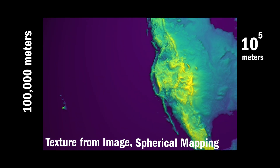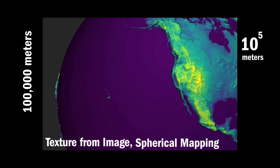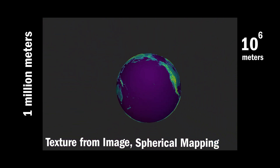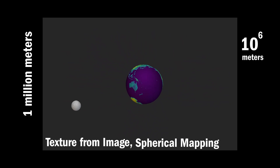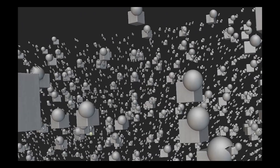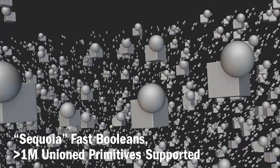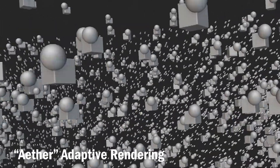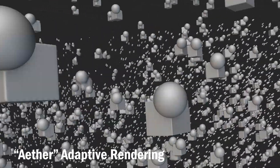At 10 to the 5th meters — the distance an orbiting satellite covers in 10 seconds — we continue to 10 to the 6th, a 1 with 6 zeros: 1 million meters. We apply a spherical mapping of the Earth topographies using a high-resolution image imported from the NASA Visible Earth Catalog. Sphere cubes surround us — millions of uniquely sized implicit spheres and cubes union together to fill an ellipsoid.